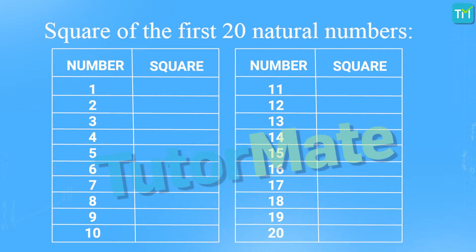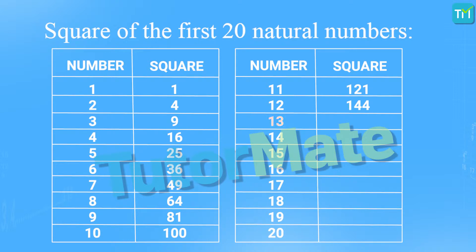Squares are used to solve a lot of problems in algebra and geometry, and they are even used in scientific formulae. So let us quickly go through them. The square of 1 is 1, of 2 is 4, of 3 is 9, and so on. Then we have the square of 11 as 121, the square of 12 as 144, and that of 13 as 169. On and on it goes till we have the square of 19 as 361 and finally the square of 20 as 400.